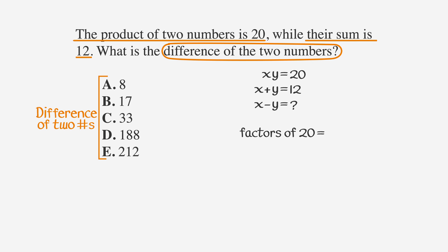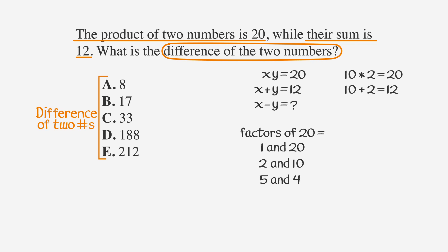The factors of 20 are 1 and 20, 2 and 10, and 5 and 4. Quickly scanning through our list, we can see that 10 and 2 are the only ones that multiply to get 20 and add up to get 12. Since 10 and 2 both multiply together to get 20 and add together to get 12, we know those must be our x and y. Now we're looking for the difference of x and y, which means we're going to subtract. 10 minus 2 is 8, so our answer is A.